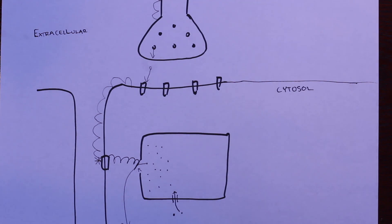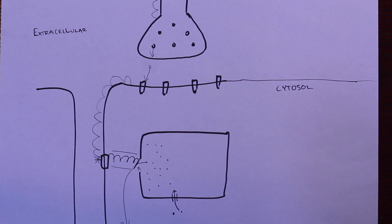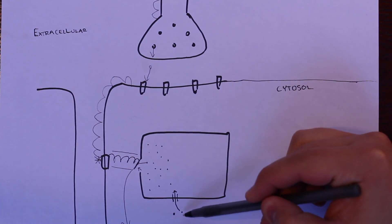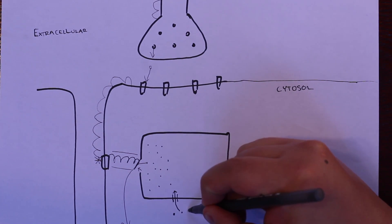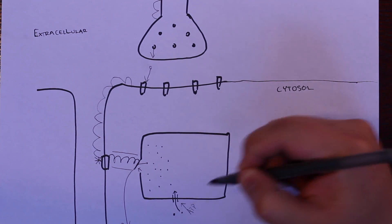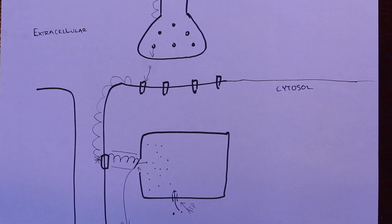Now we don't want calcium just to stay inside the cytosol because that wouldn't be ideal. The way that we remove calcium from the cytosol is through this pump. When ATP binds to this pump, it allows calcium to be transported out of the cytosol and into the sarcoplasmic reticulum.